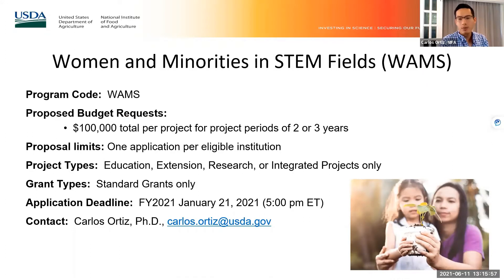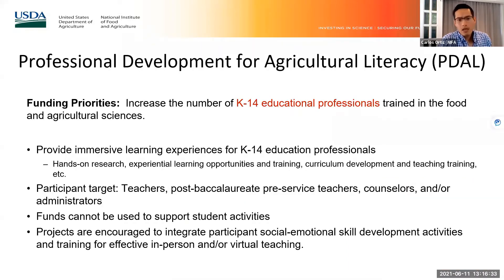For WAMS, the project budget is $100,000 for projects lasting two or three years. The competition for this program is nearly complete for fiscal year 2021. As we wait for appropriations for fiscal year 2022, I encourage you to look at the Request for Applications calendar to see when they'll be competed again. WAMS proposals were due in January, so I would expect something similar for the next fiscal year.